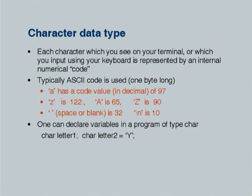Every character we see on our terminal or input using a keyboard is represented by an internal numerical code. ASCII code, which is 1 byte long, is used. For example, lowercase 'a' has a code of 97, 'z' is 122, capital 'A' is 65, capital 'Z' is 90. A space has ASCII code 32. The newline character backslash-n is 10. One must distinguish between character '0' and backslash-0 (null). Backslash-0 or null is an actual zero value with ASCII code 0, whereas the character '0' has a different code as it is part of the visible graphic symbols.